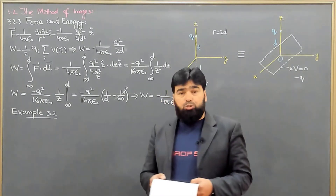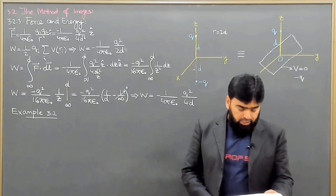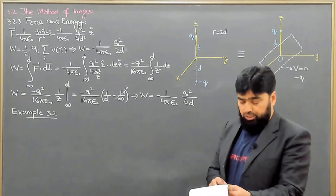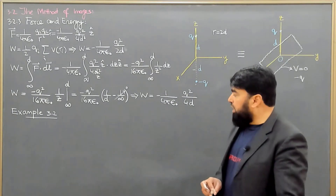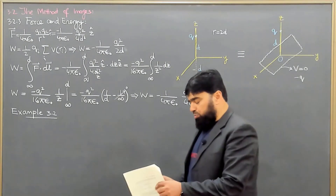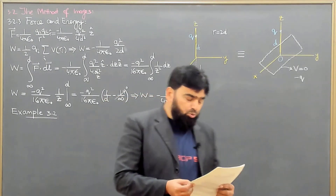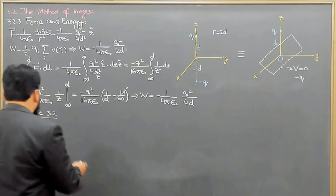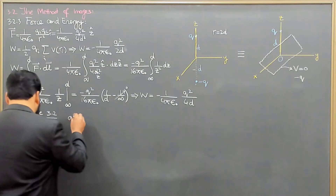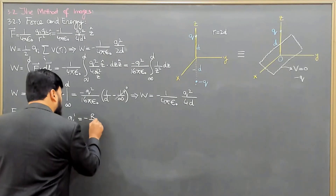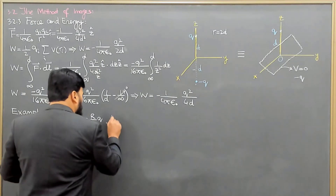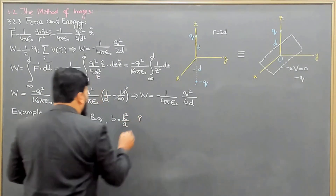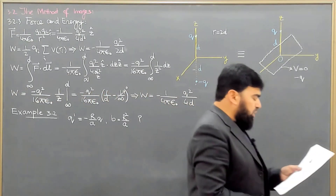Now let us discuss Example 3.2 in the context of the method of images. This example states: a point charge q is situated at a distance a from the center of a grounded conducting sphere of radius R. Find the potential outside the sphere. The solution gives q prime equal to minus R over a times q, and the image charge position b equal to R squared over a.